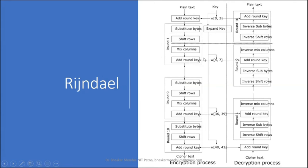All 10 rounds have the same structure, and after 10 rounds the output is the ciphertext. The decryption process is the reverse operation — the same operations in reverse order. Unlike the Feistel cipher, there is no splitting of the plaintext block into left and right halves; it is very simple in structure.